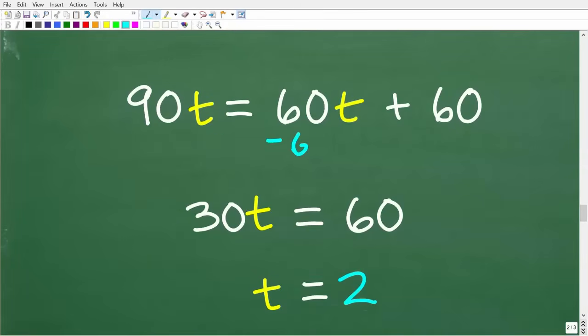And how do I do that? Well, that's easy. All I have to do is subtract 60T from both sides of the equation. Remember the golden rule of algebra. Whatever you do to one side of the equation, you have to do the exact same thing to the other side. So now we're going to add down in a common manner. So 90T minus 60T is 30T. And then over here, 60Ts go away. 60T minus 60T is 0. We don't need to write that. And then 60 plus nothing is 60.